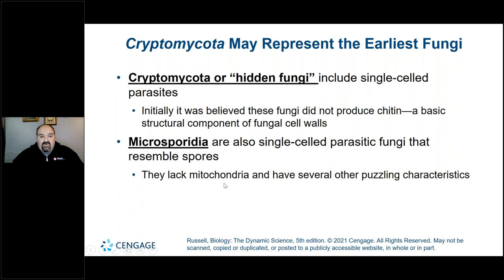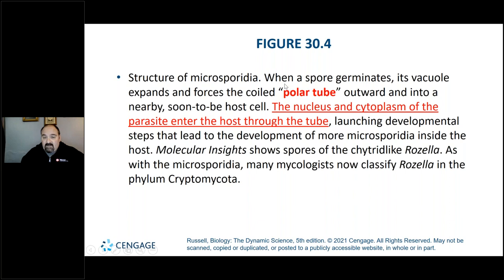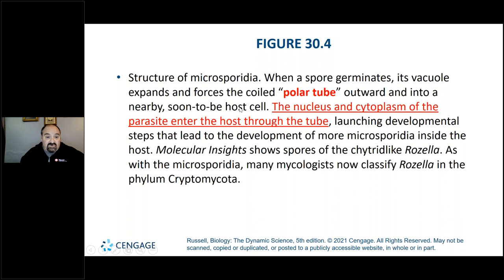Microsporidia are interesting in that they lack mitochondria — recall that mitochondria are involved in production of ATP and also have their own mitochondrial DNA. The structure of a microsporidia: it's a single-cell parasite. When the spore germinates, its vacuole expands and forces the coiled polar tube outward and into a nearby host cell. The nucleus and cytoplasm of the parasite enter the host through the tube, launching its developmental stages in this parasitic relationship.